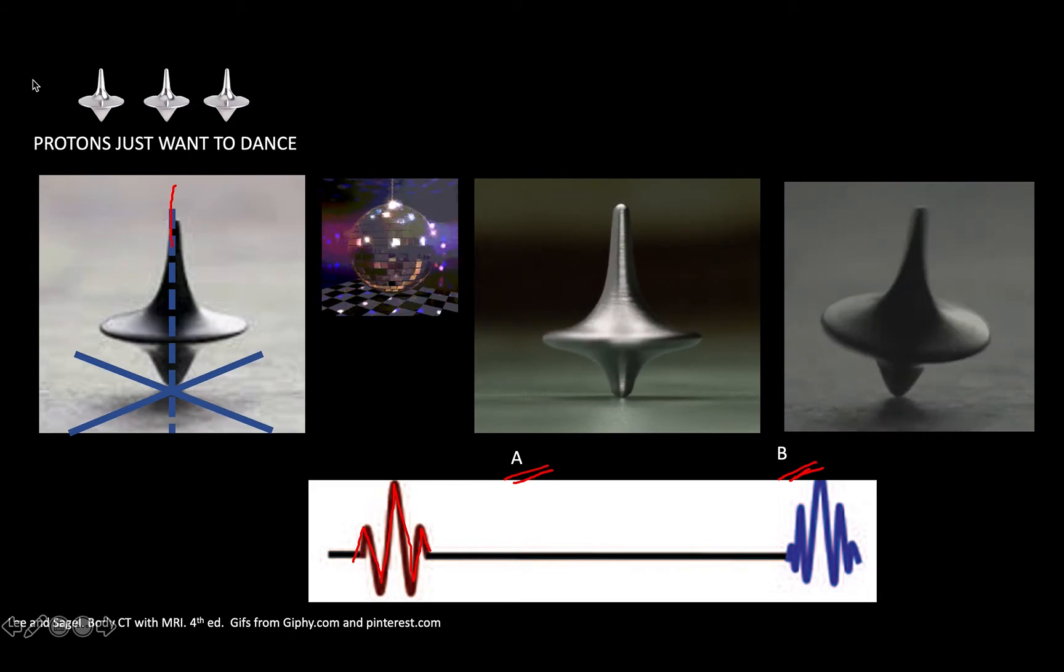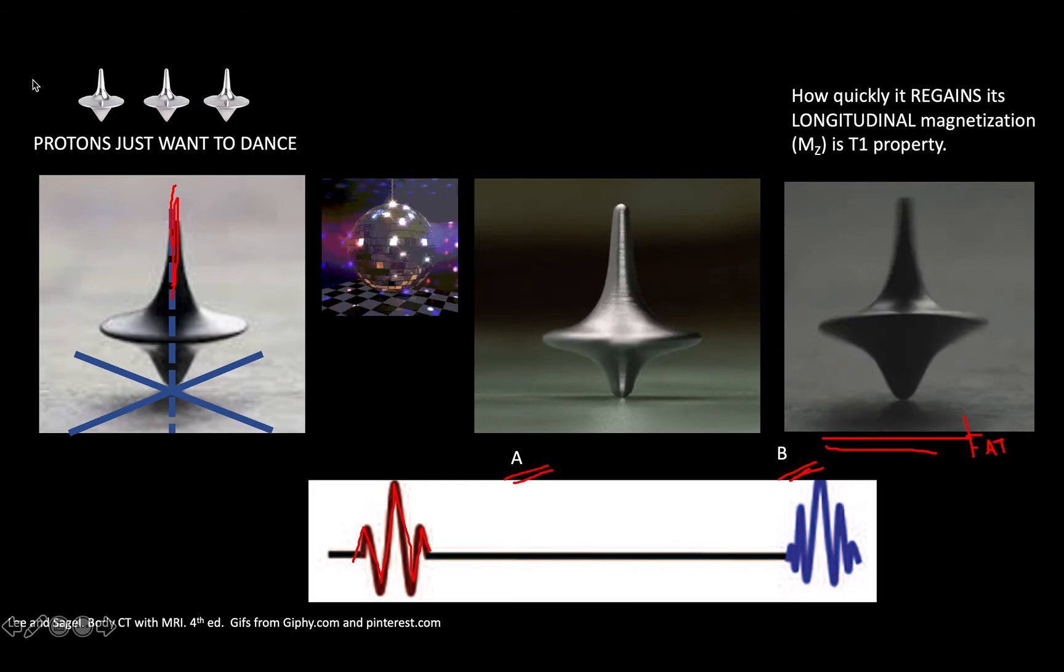Now let's focus on top B. This top B, after receiving the initial RF pulse, will try to go back to its initial position here when it was aligned to the magnet, to the magnetic field. Different protons would have a different rate of this time to go back to its original position. If this top B was a proton from fat, it will be quick to regain its position. T1 relaxation would refer to its T1 relaxation property.